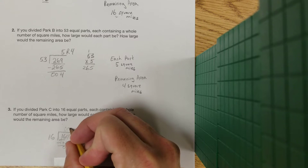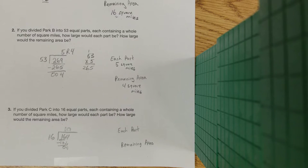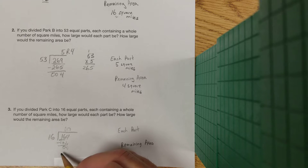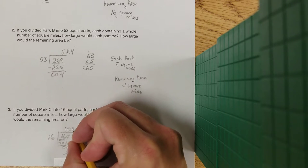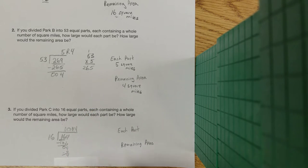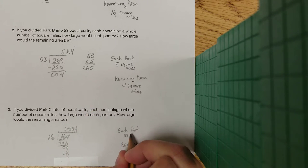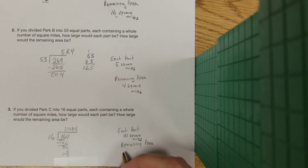We'll go zero times. You can go zero times 16 and you can subtract out the zero, or you can just skip that step and leave it at 4 because that is our remainder. So each part is going to be 10 square miles and the remaining area is 4 square miles.